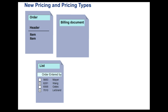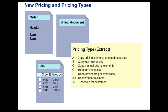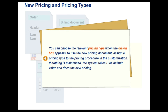New Pricing and Pricing Types: the Pricing Behavior can be configured using Pricing Type. You have two controls to control the new pricing in the Sales document. Updated prices on the Condition screen are available both at Header as well as Item Level. You can choose the relevant Pricing Type when the Dialog box appears. To use the new Pricing document, assign a Pricing Type to the Pricing Procedure in the Customization. If nothing is maintained, the system takes B as default value and does the new Pricing.